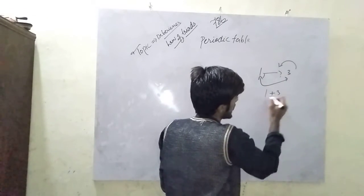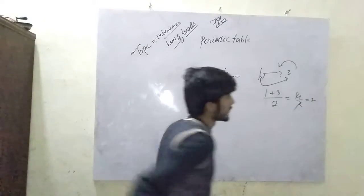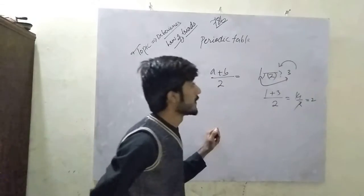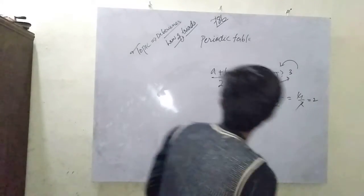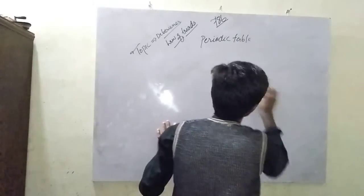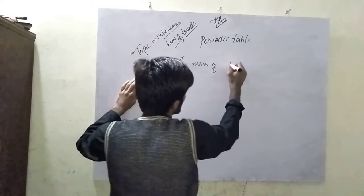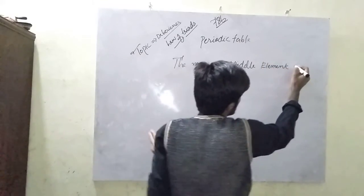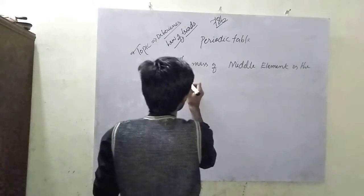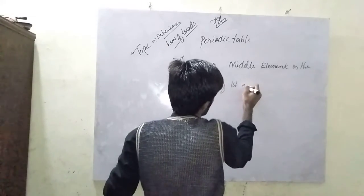To find the middle number, take the 1st and 3rd numbers, add them, and divide by 2: that gives 4 upon 2, which equals 2. So 2 is the number which lies between 1 and 3. Now, moving to Dobereiner's Law of Triads: the law states that the atomic mass of the middle element is the arithmetic mean — the average — of the 1st and 3rd elements.